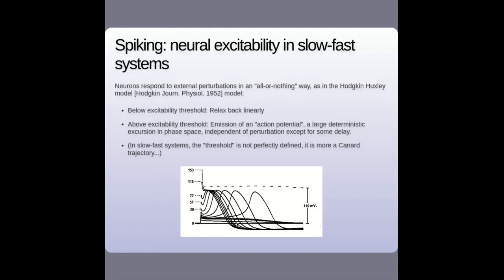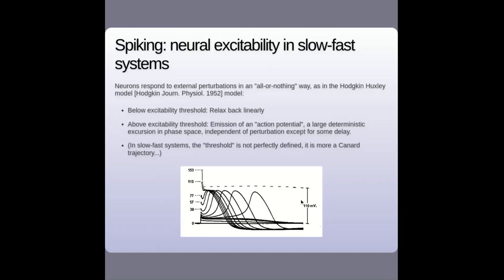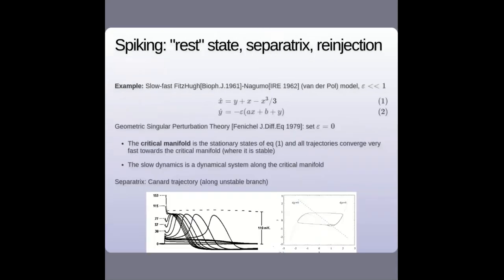It's a very large deterministic excursion essentially independent of the perturbation — for very large perturbations the response is always the same, just coming earlier in time. The threshold separating zero response from one response is not perfectly mathematically defined; in slow-fast systems it is more a canal trajectory. The simplest model was proposed independently by FitzHugh (doing biophysics) and Nagumo (doing an electronic model of impulse propagation in nerves). Both arrived at the same system of equations, closely related to the van der Pol model — a slow-fast system where x is fast and y is slow due to the epsilon term, which is much smaller than one.